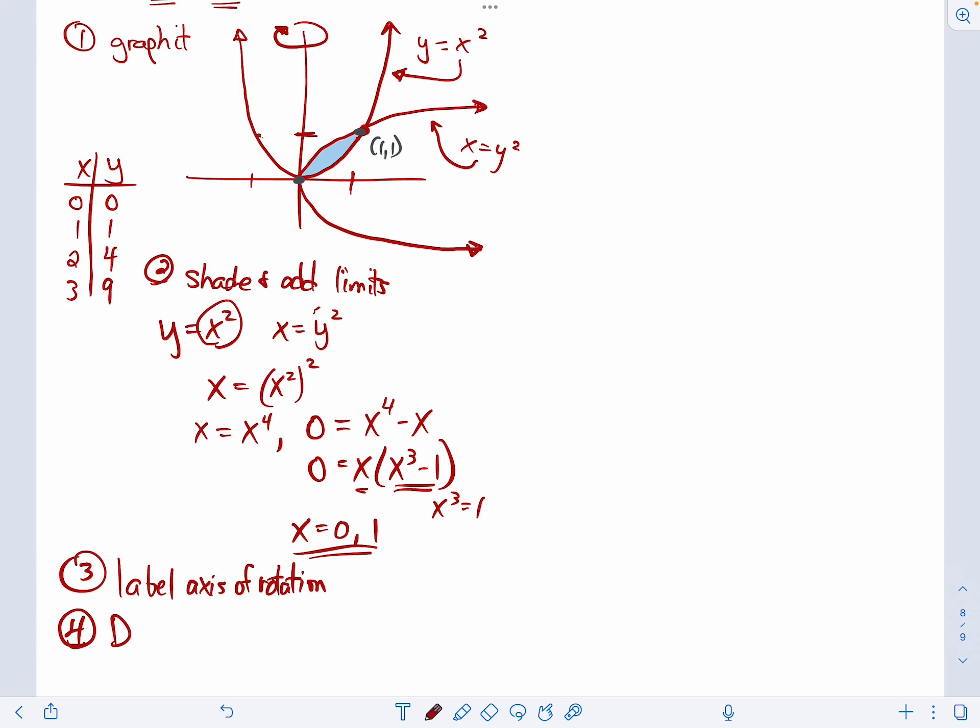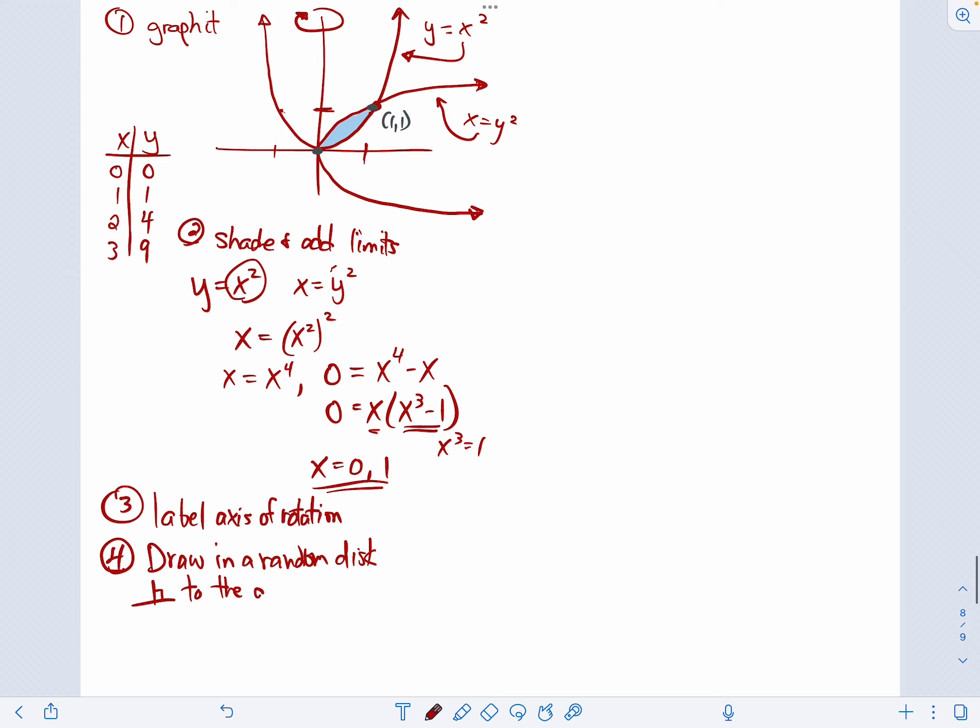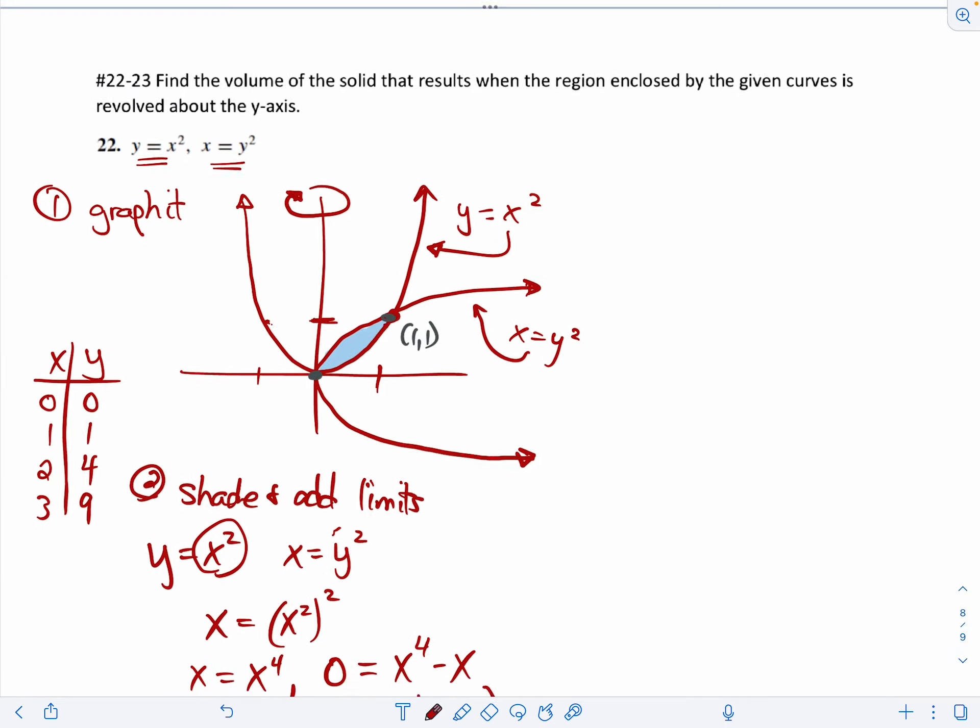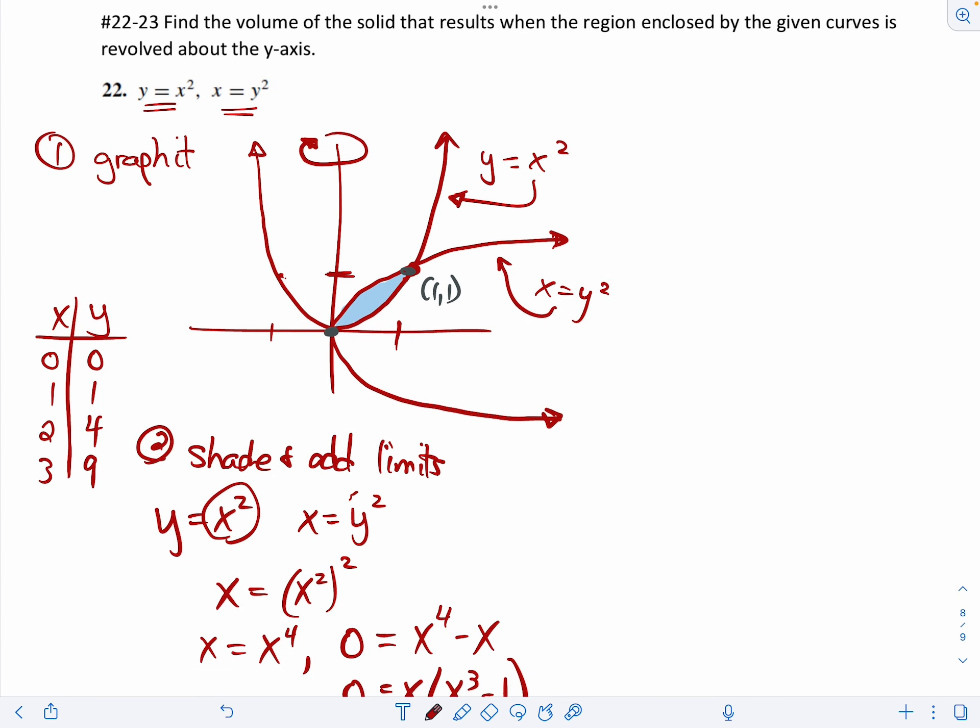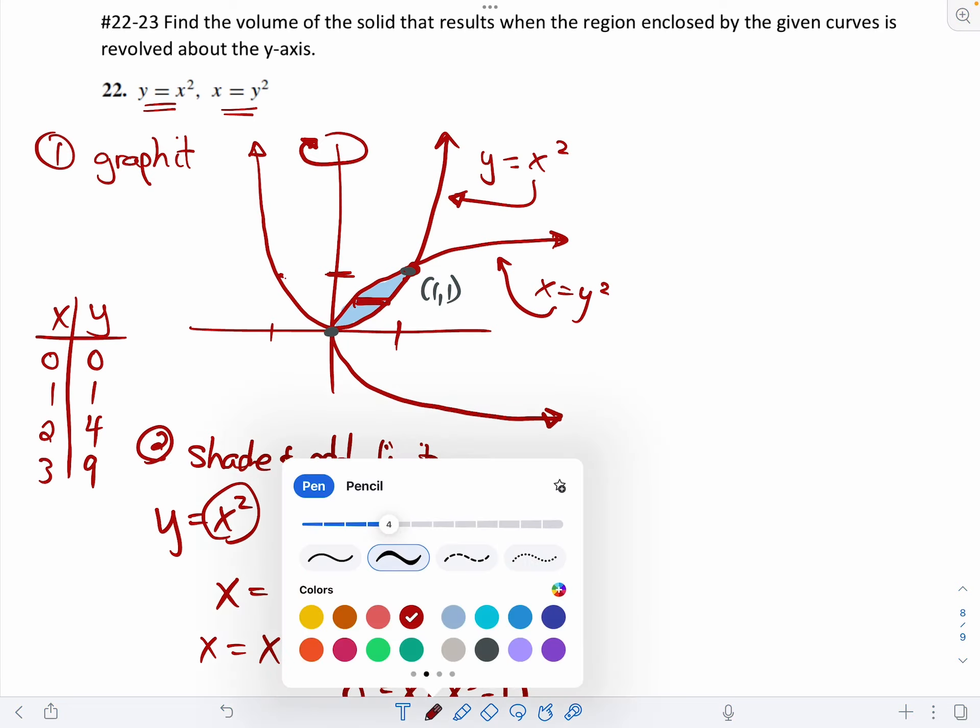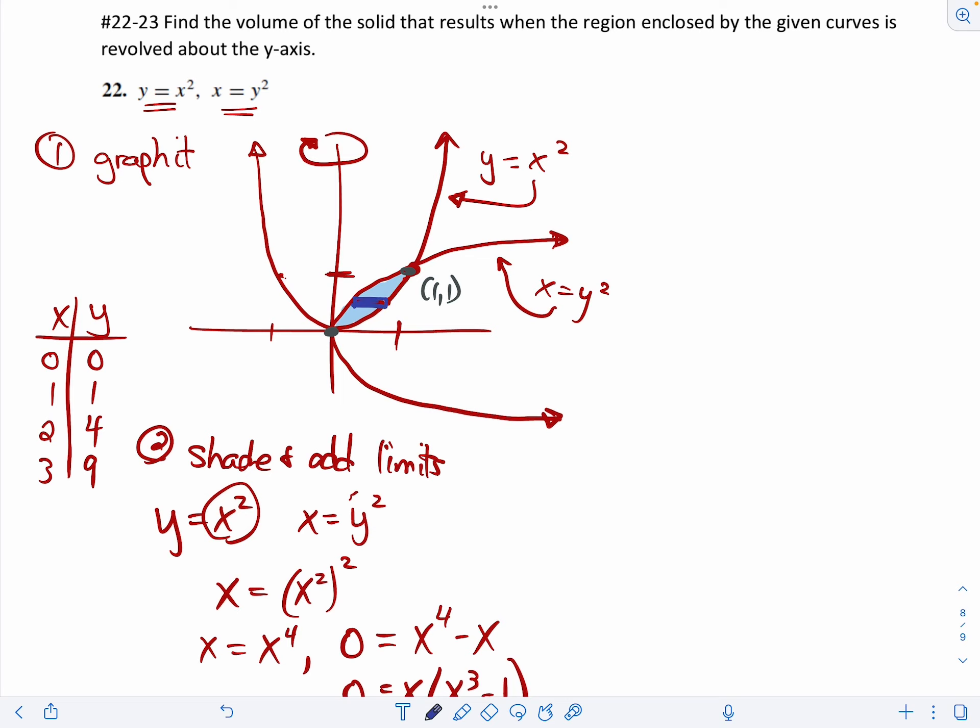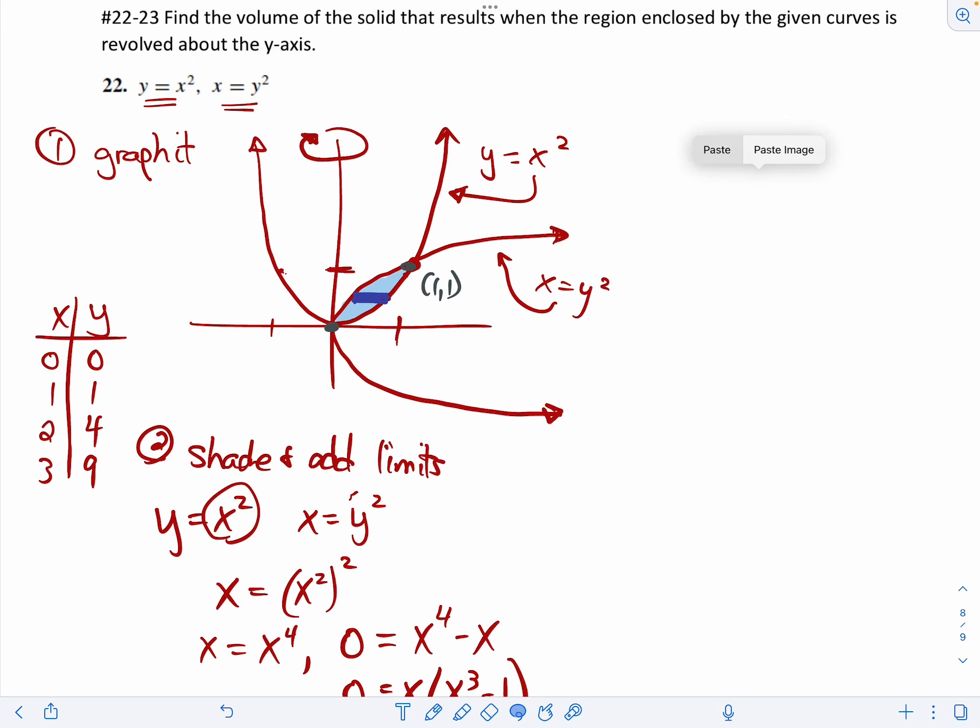you draw in a random disk that is perpendicular to the axis of rotation. Here's what that looks like. I'm going to zoom in on that region and a random disk that is being revolved around the axis of rotation means something like that. I'm going to make it a different color.